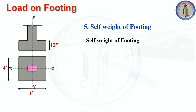Next is the self-weight of the footing. Footing size is 4 feet by 4 feet (1.22 m × 1.22 m) with a depth of 12 inches (0.3 m). Self-weight = 1.22 × 1.22 × 0.3 × 25 = 11.16 kN.